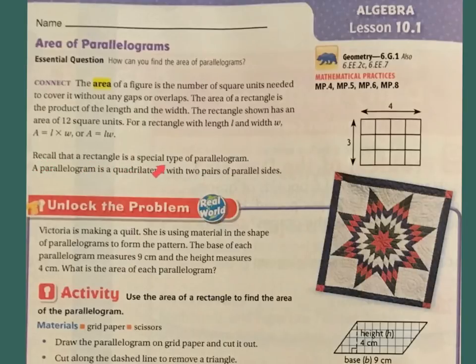Recall that a rectangle is a special type of parallelogram. A parallelogram is a quadrilateral with two pairs of parallel sides. So on this one, if we had three width and four length, we would say four times three because we would plug in L and W and we would get our area. Three times four is 12.